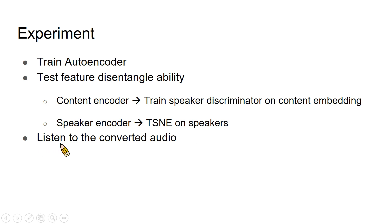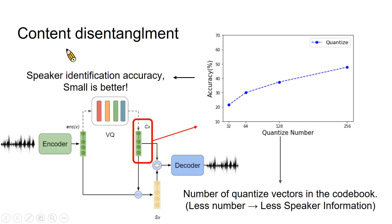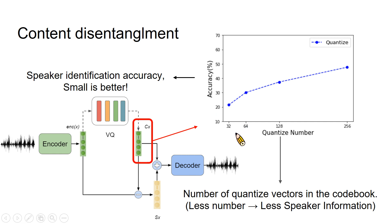Finally, we listen to the converted audio. This is our result for the content disentanglement experiment. We fix our model and train the speaker classifier on the content embedding. The X-axis shows the codebook size and the Y-axis shows speaker classification accuracy. Lower accuracy means stronger disentanglement ability. When the codebook size is small, we have very strong disentanglement ability. But when we enlarge the codebook size, the disentanglement ability drops. When the codebook size is 256, there is almost 50% accuracy, which cannot achieve voice conversion.